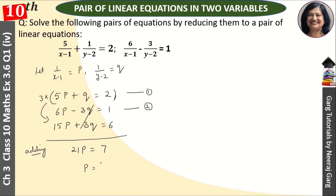Then p is equal to 7 upon 21, and p is equal to 1 upon 3. This is our p value.